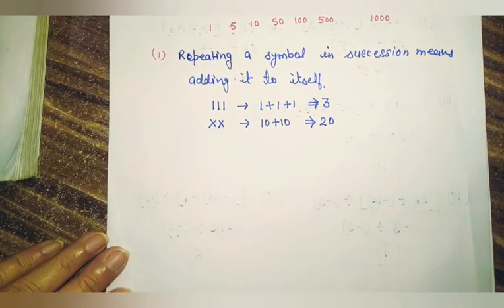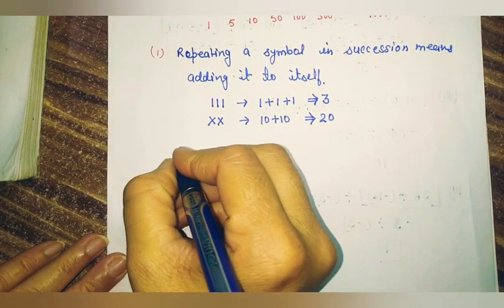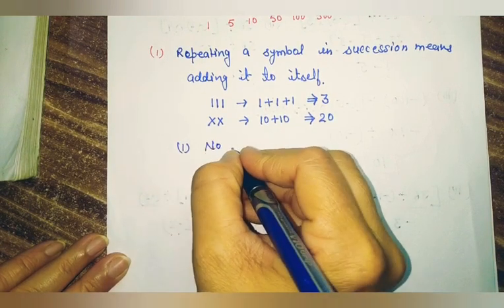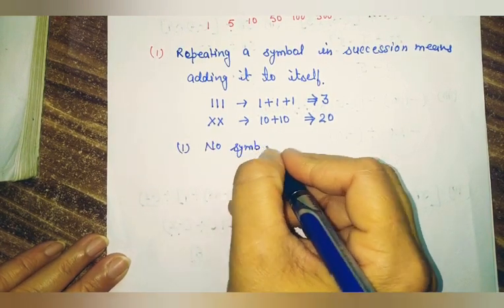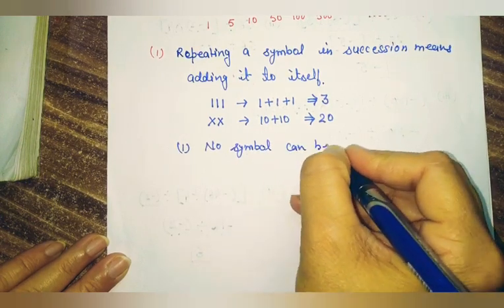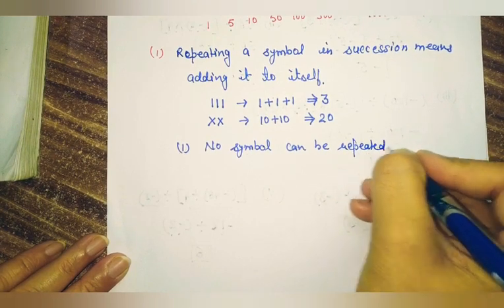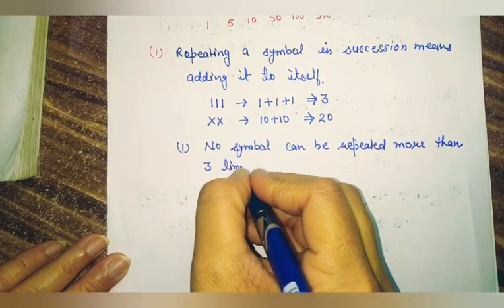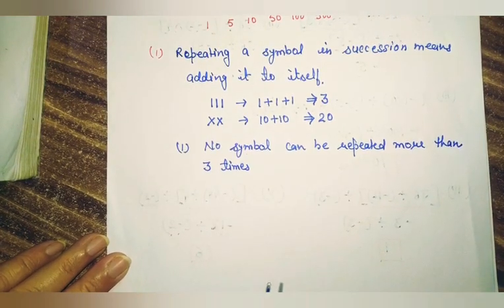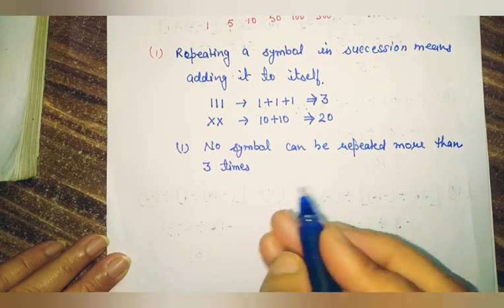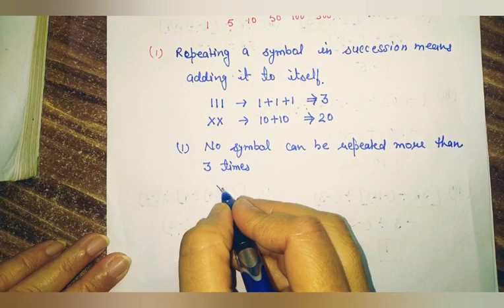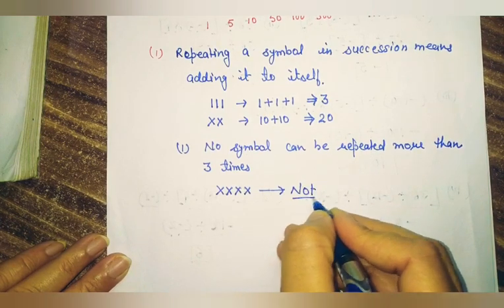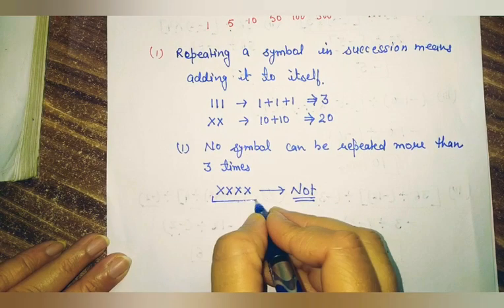But students, here is a rule about repeating numbers. A symbol can be repeated only 3 times — no symbol can be repeated more than 3 times. If we repeat a symbol more than 3 times, that means we have written a wrong number. For example, if we repeat X 4 times, this is not a valid Roman number — it is said to be invalid.